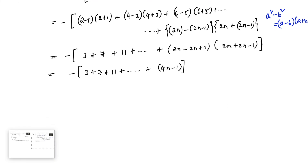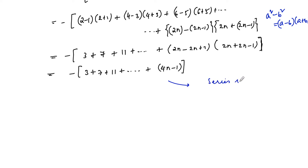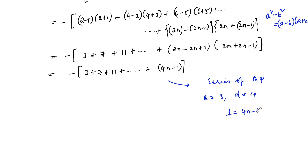Clearly it is an arithmetic progression. The first term a = 3, the common difference d = 7 - 3 = 4, and the last term is 4n - 1.